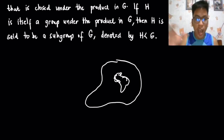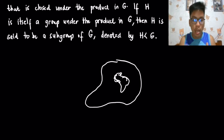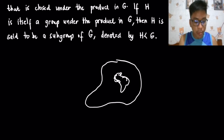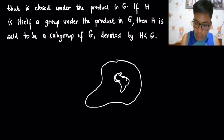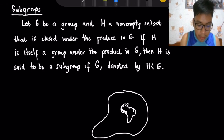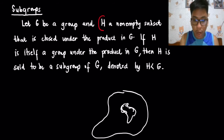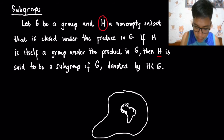When you have an entire group G and a subgroup inside it, whatever would be the property with respect to the operation on G will also be applied to the subgroup. Given a group G, and H a non-empty subset that is closed under the product in G, if H is itself a group under the product in G, then H is said to be a subgroup of G. We denote this with a specific symbol to indicate that H is a subgroup of G.